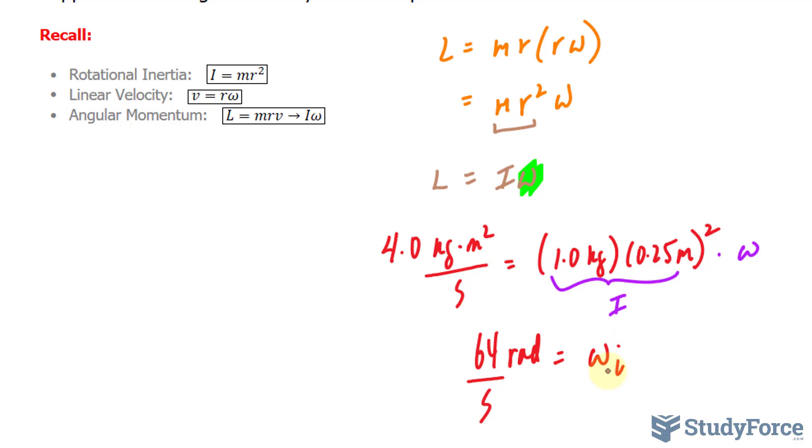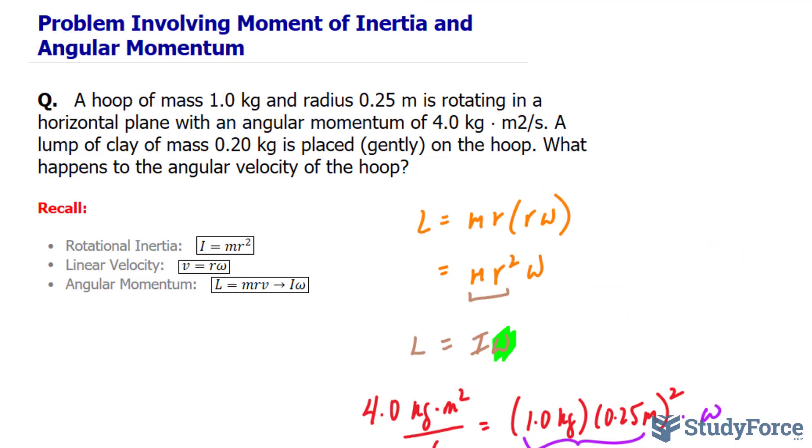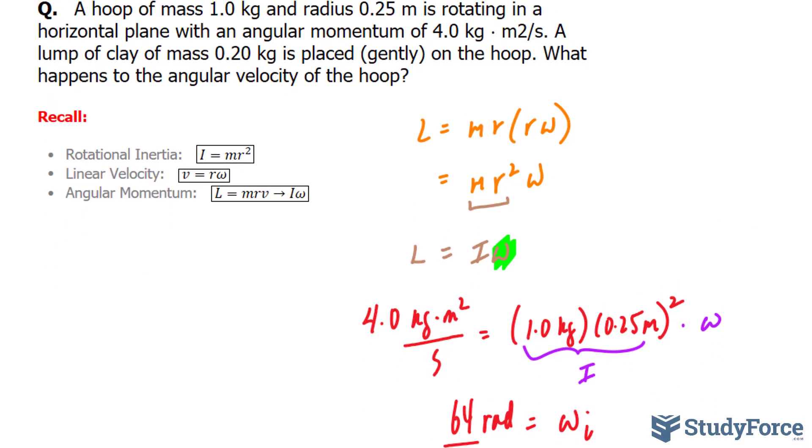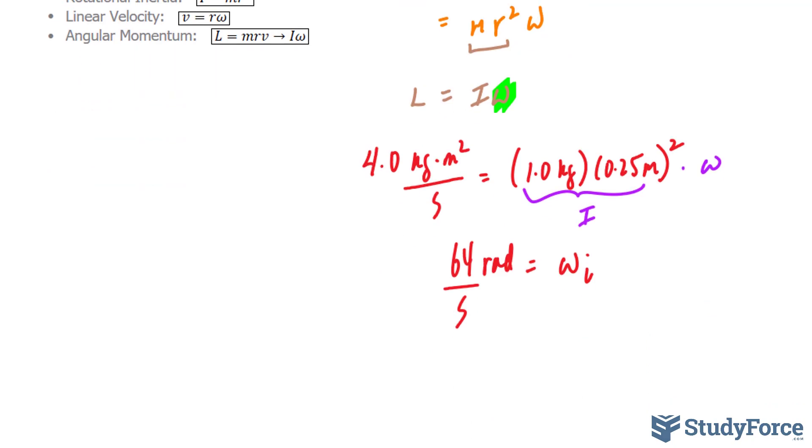So that's the initial angular velocity. Now we have to calculate the angular velocity after the lump of clay was added. So if the lump of clay is being added, then the mass is going to increase by 0.20 kilograms. This means that we have to redo this calculation, this one right here.